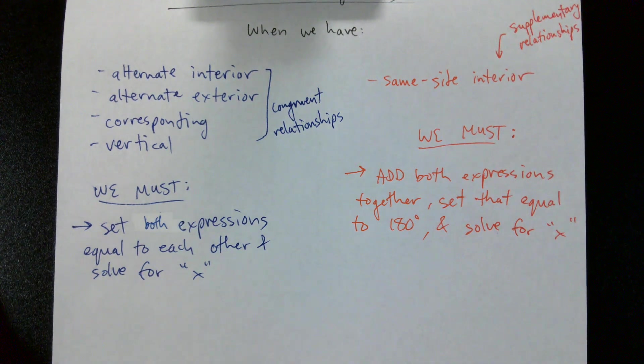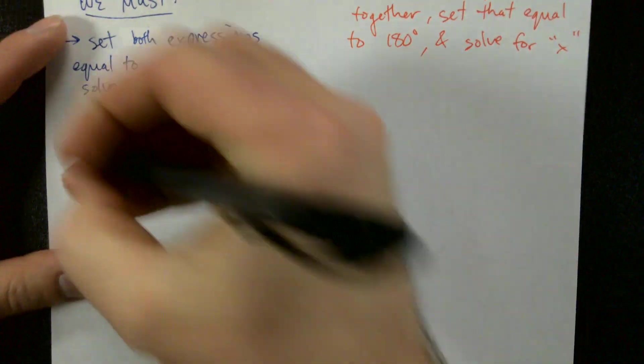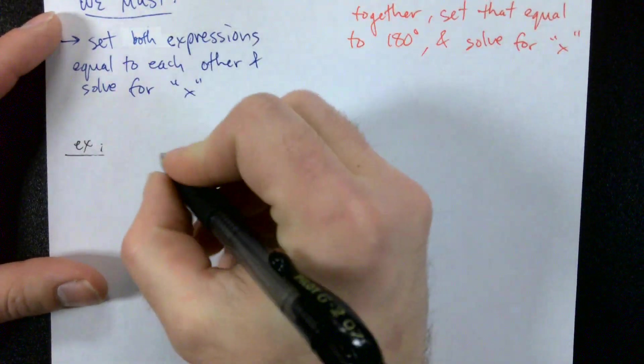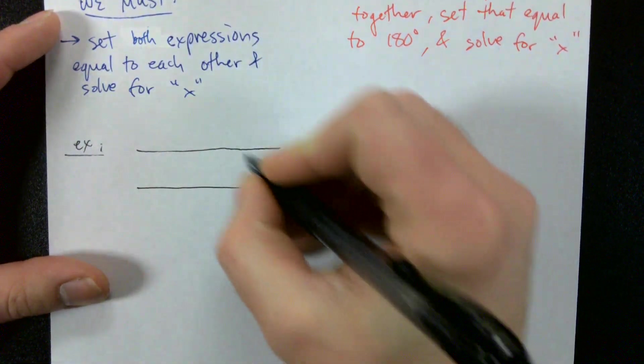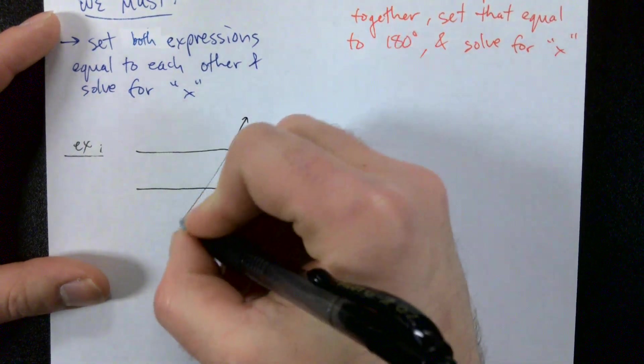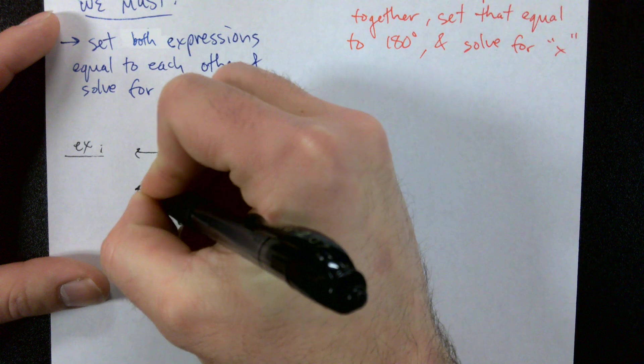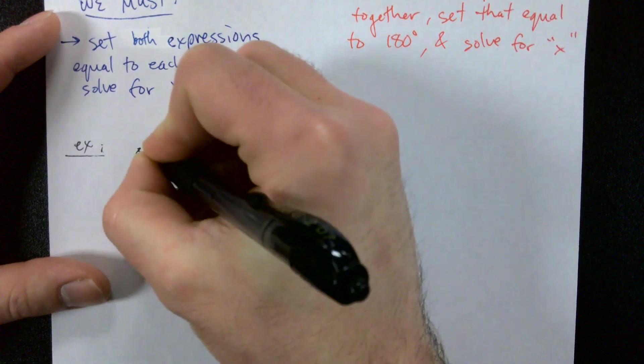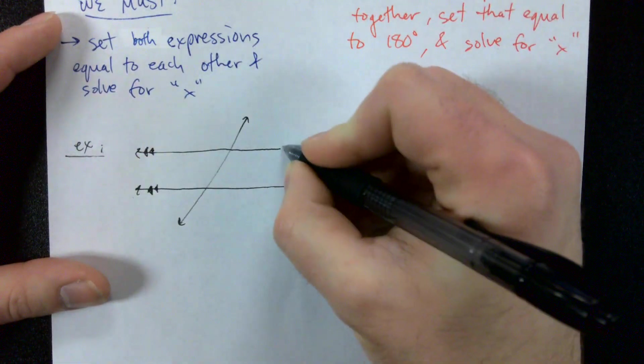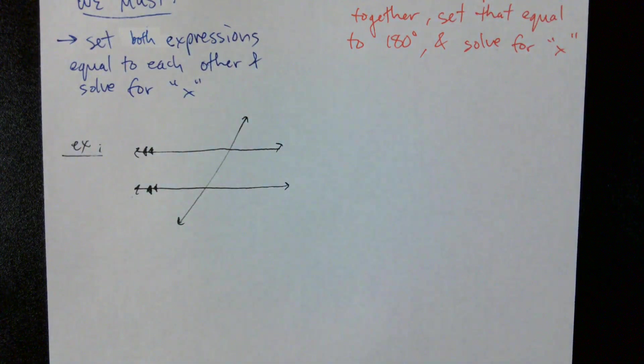Let's do an example. Draw some parallel lines with the transversal cutting through. Something like that, it doesn't have to be perfect.